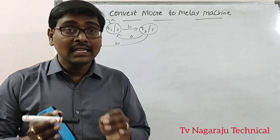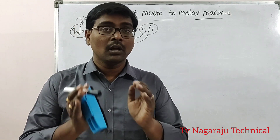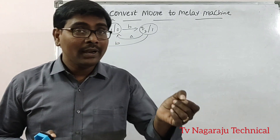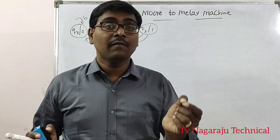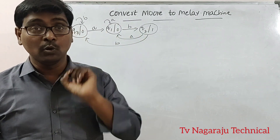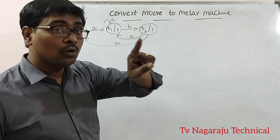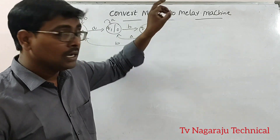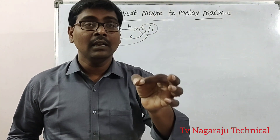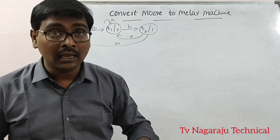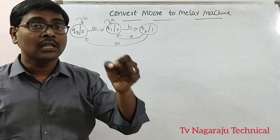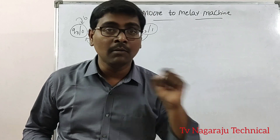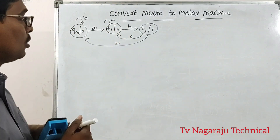Welcome to our channel. In this session, we are going to discuss how to convert a Moore machine into a Mealy machine. Moore and Mealy machines are simply finite automata with outputs. In the Moore machine, the output depends on the present state only, but in the Mealy machine, the output depends on the present state along with the input.